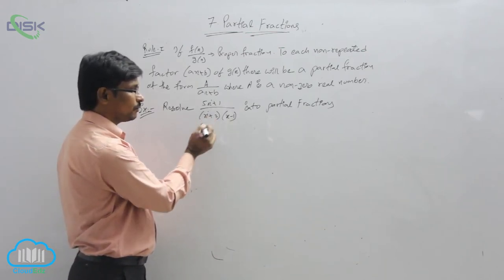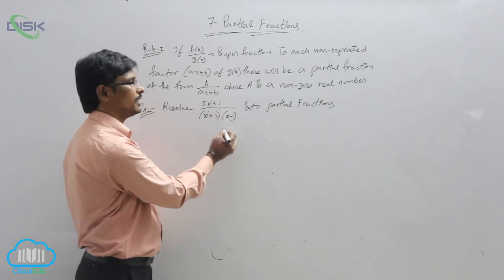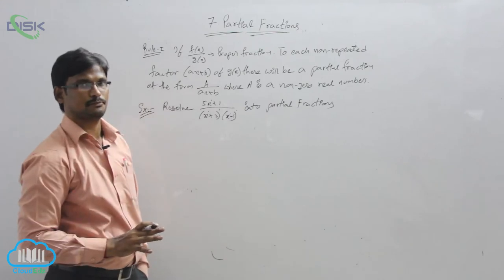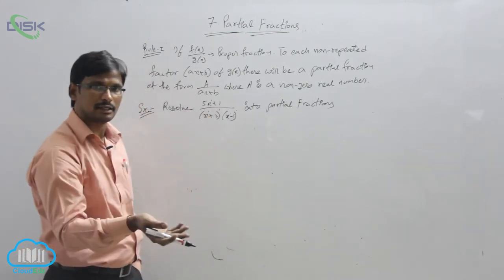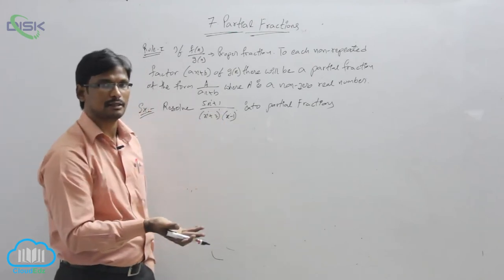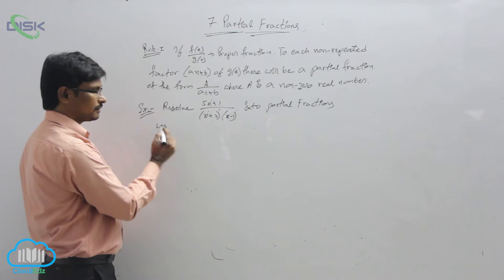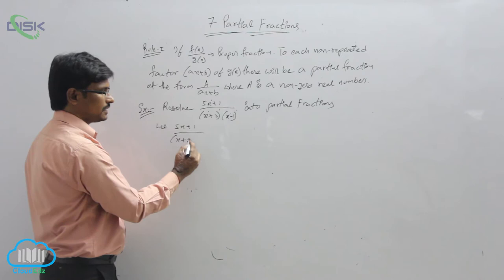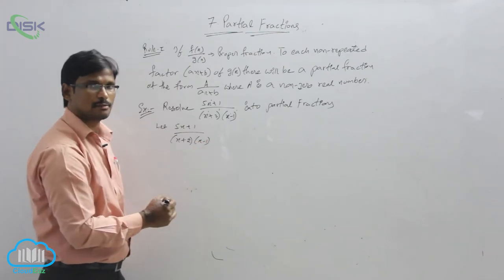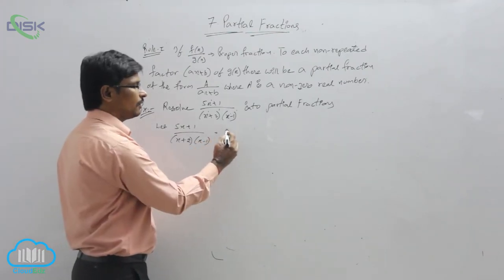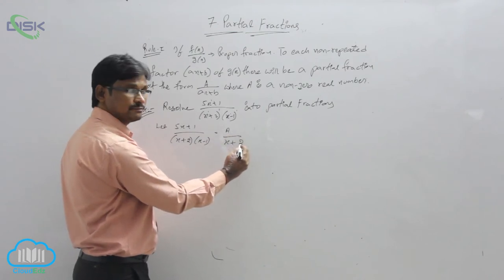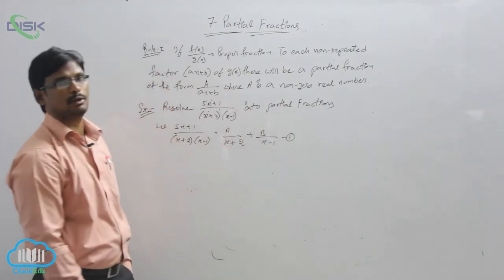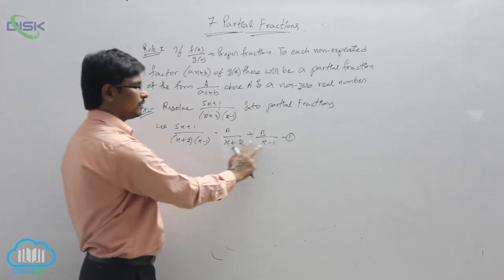In this proper fraction, observe: x has power 1 and the whole factor has power 1. If it is x power 1 and whole power 1, this is the method we use. If it were x squared or a whole square, a different method would apply. So for this case, we write: (5x + 1) / [(x + 2)(x - 1)] = A/(x + 2) + B/(x - 1). Take this as equation number 1. These are the two partial fractions.